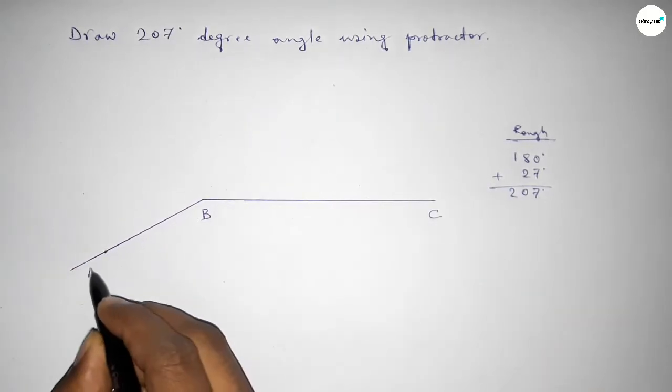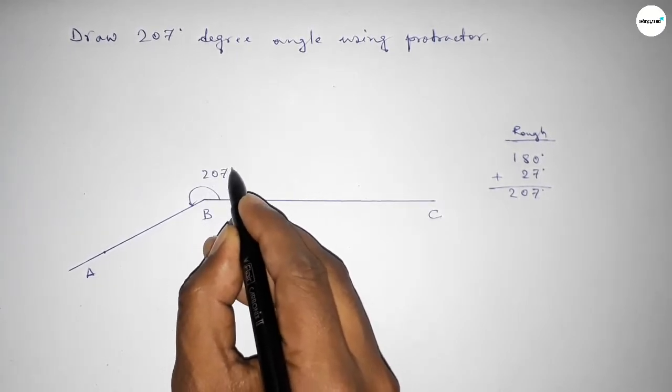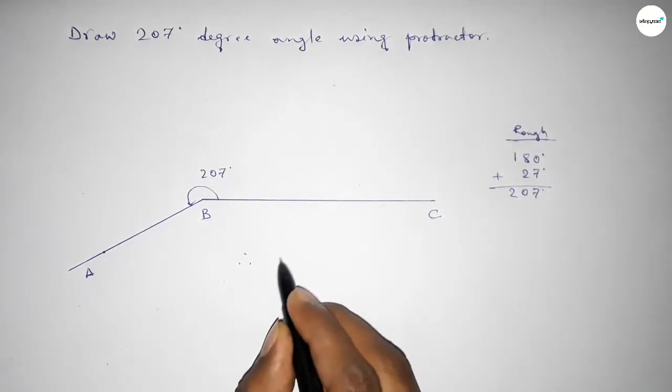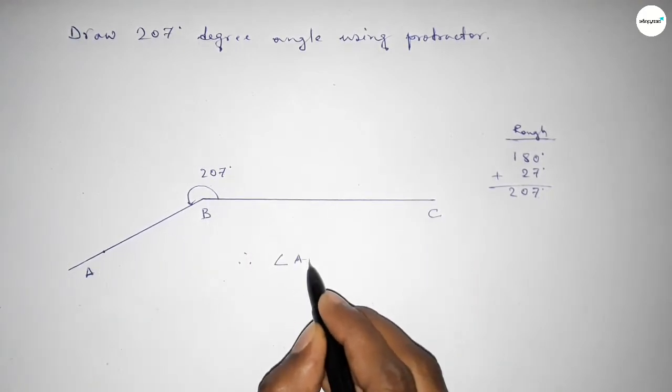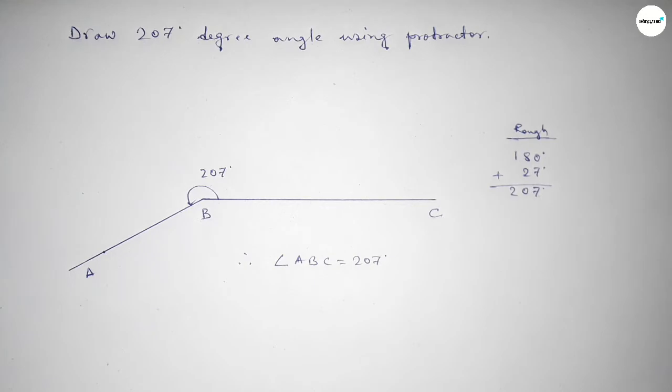So angle ABC is 207 degrees. Therefore, angle ABC equals 207 degrees. That's all, thanks for watching.